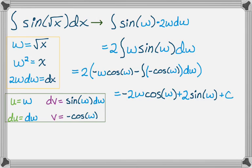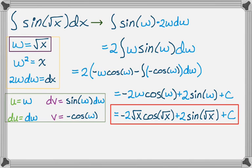But then don't forget the original problem is not in terms of w, so we go back and we use this substitution, w is equal to radical x, and we rewrite our answer. So we get negative 2 radical x cosine of radical x, plus 2 sine of radical x, plus c. And that's the answer to that problem.